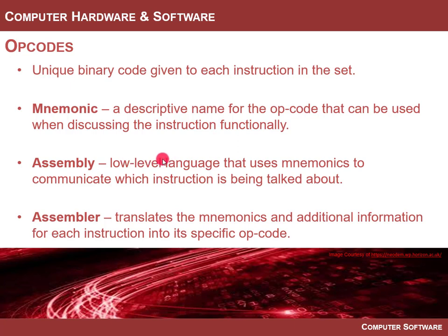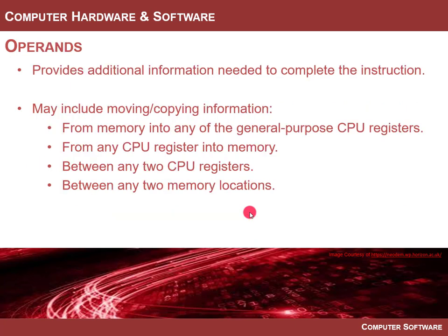To take assembly language — basically the mnemonics for each instruction — and convert it into binary codes, there's a tool called an assembler that just translates each mnemonic into its corresponding binary code. Some instructions require additional information beyond the opcode, and we call that the operand. For example, if you want to move information from register zero out to an address in memory, the memory address is a variable within the instruction. It's something you provide as additional information along with the instruction. Operands are often addresses or register identifiers — anything supplemental to the opcode itself.